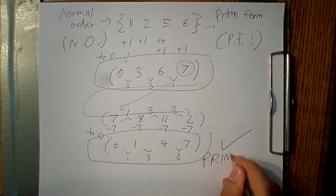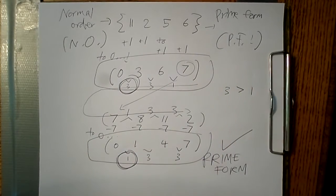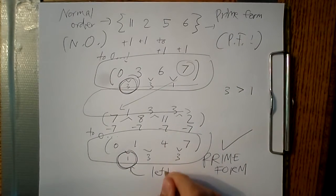Now, 0, 1, 4, 7 is more compact to the left than 0, 3, 6, 7. It's easy to spot this one because of the size of 1 here, the half step.